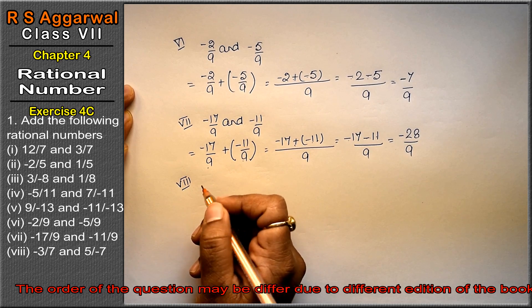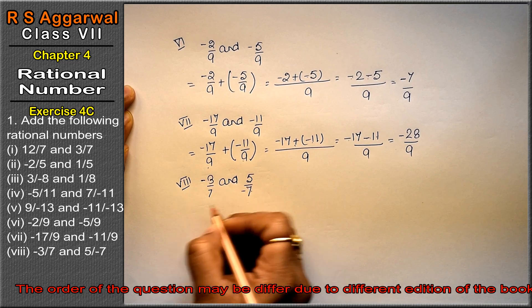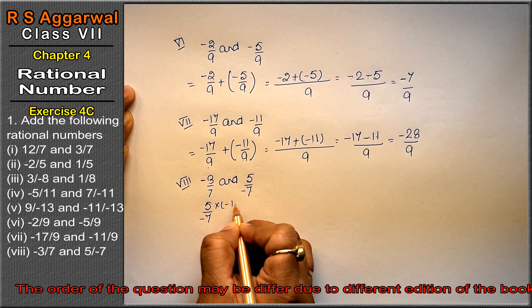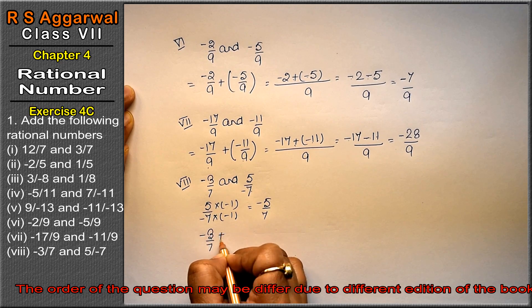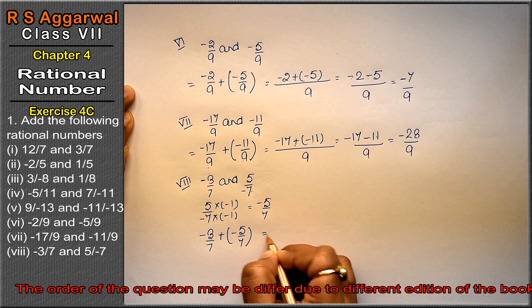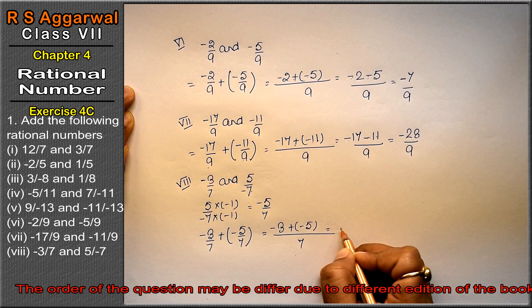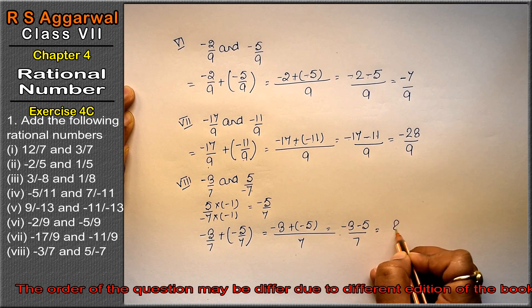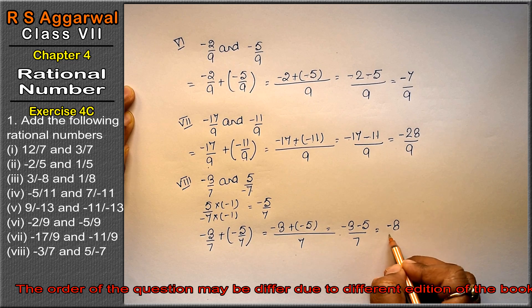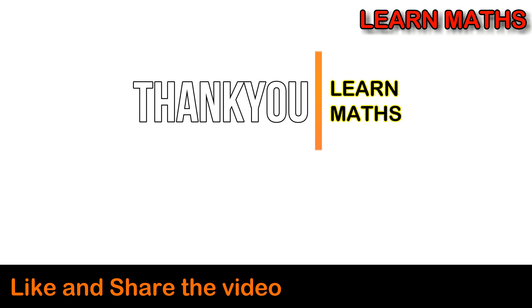8th part is minus 3 upon 7 and 5 upon minus 7. For 5 upon minus 7, multiply by minus 1 top and bottom to get minus 5 upon 7. So: minus 3 upon 7 plus minus 5 upon 7. Denominator is 7. Minus 3 plus minus 5: both same sign, add them: 3 plus 5 = 8, sign is minus, so minus 8 upon 7 is the answer. Thank you — if you understood the step-by-step solution, please subscribe to my channel on maths and share with your friends.